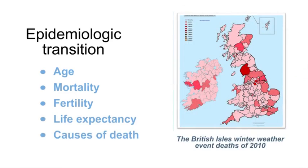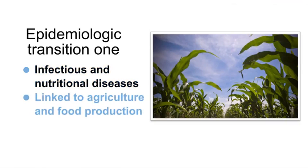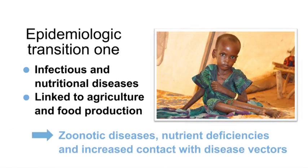The human population has gone through four major disease transitions since the agricultural period began. The first transition is related to the emergence of infectious diseases and diseases related to nutrition, and to the beginning of the practice of agriculture and food production 10,000 years ago. People became less dependent on hunting and gathering once they were able to produce food and domesticate animals. This shift led to zoonotic diseases, nutrient deficiencies, and increased contact with disease vectors during agricultural activities.